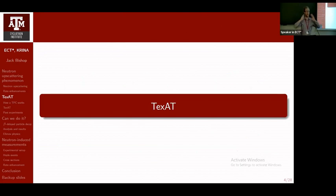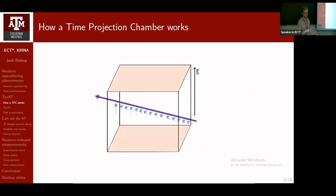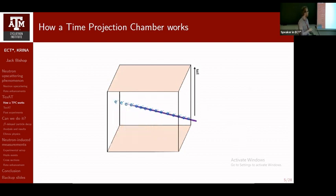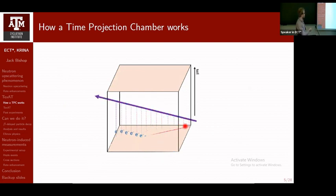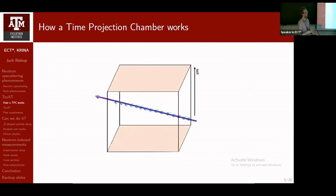We began using the TEXAT-TPC, a new device commissioned in 2017 at the Cyclotron Institute. A time projection chamber works by filling a volume with gas; a charged particle passing through creates electron-hole pairs, which are drifted by an electric field and collected on a position-sensitive pad. The trace on the pad gives one projection, and the arrival time of the electrons gives the third dimension, yielding a full 3D image of any charged particles inside the TPC device.